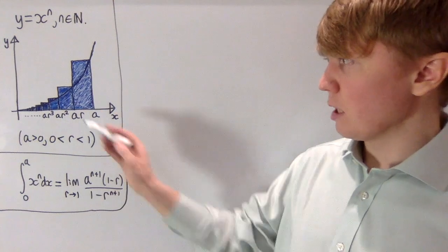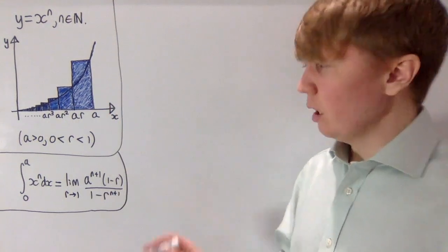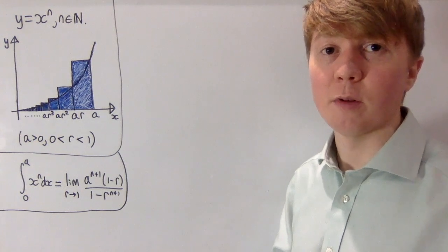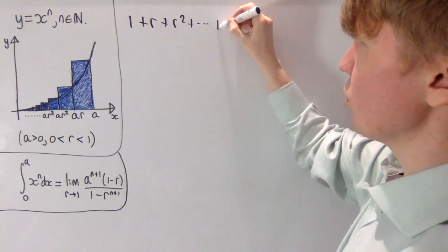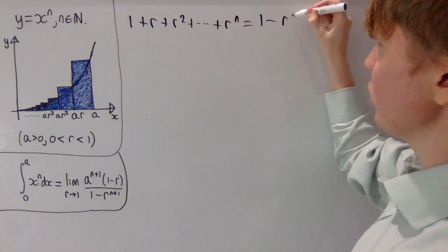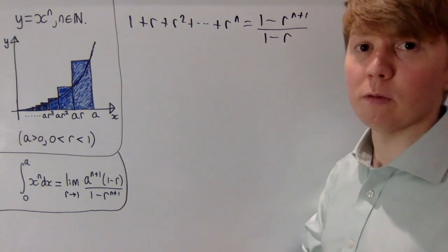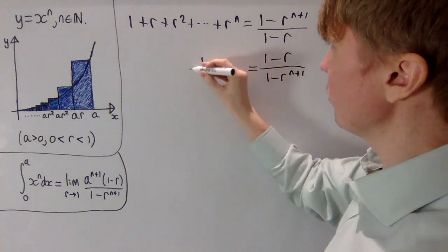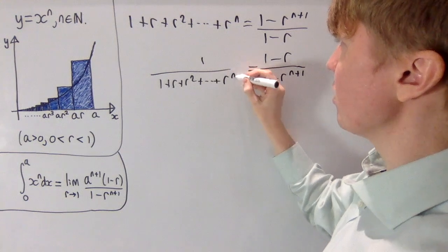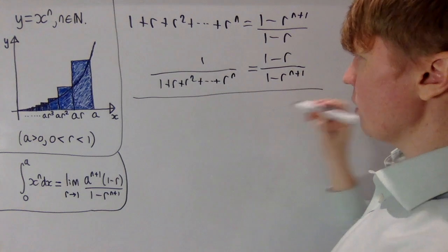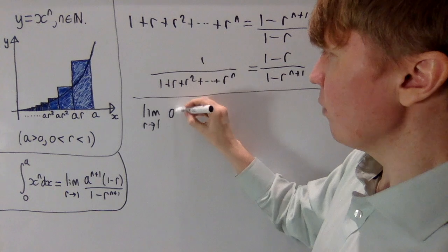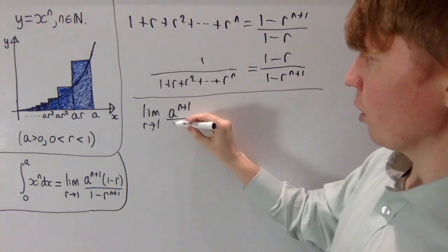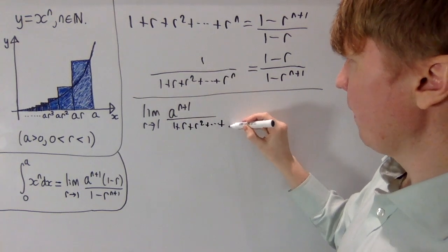To evaluate the integral we take limits as R approaches one. The term one minus R over one minus R to the n plus one might look familiar from the formula for the partial sum of a geometric series. If we have one plus R plus R squared up to R to the n, the partial sum formula is one minus R to the n over one minus R. This is almost what we've got but it's the reciprocal, so we can flip it: one minus R over one minus R to the n plus one equals one over one plus R plus R squared and so on up to R to the power of n.